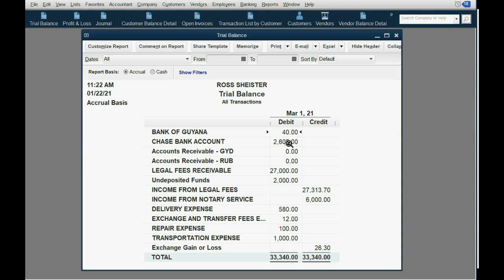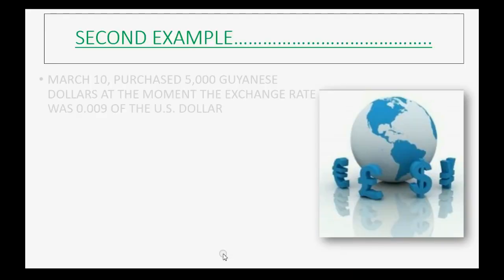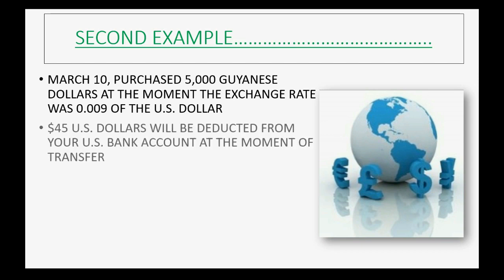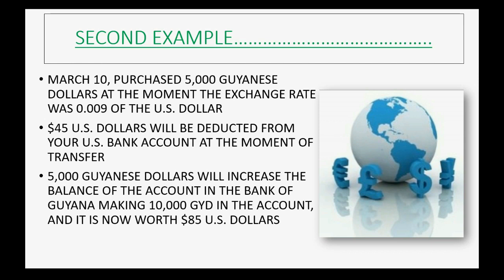Second example: on March 10th we purchased another 5,000 Guyanese dollars. At the moment, the exchange rate was 0.009 of the U.S. dollar. In this case, $45 will be deducted from your U.S. bank account. Only 5,000 Guyanese dollars will increase the balance in the Bank of Guiana, making 10,000 Guyanese dollars in the account, now worth $85 U.S.